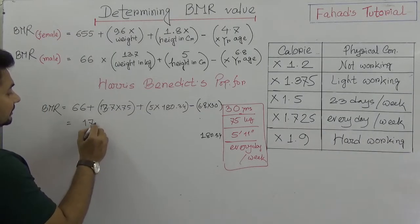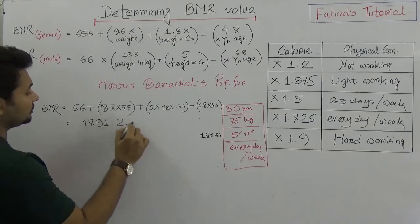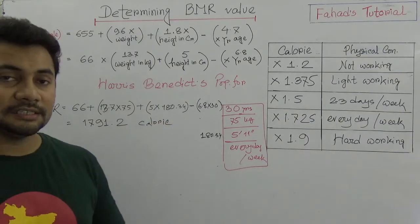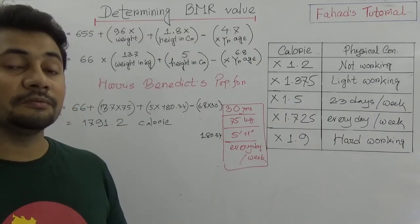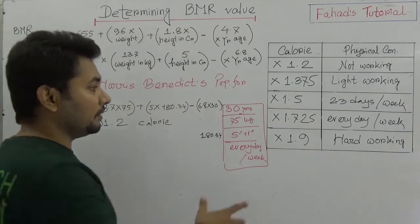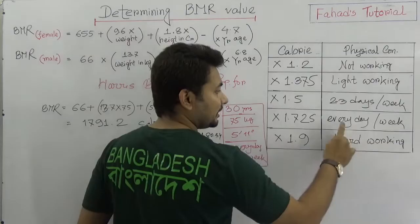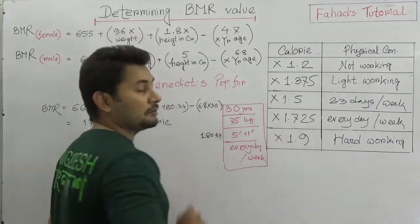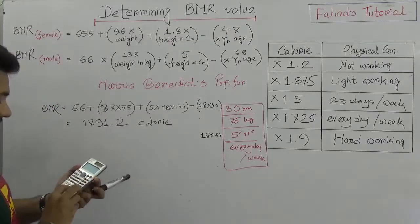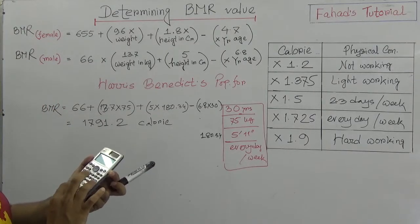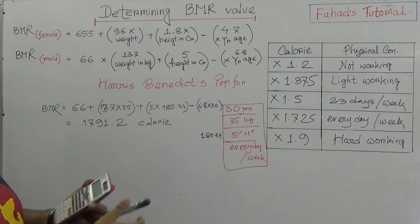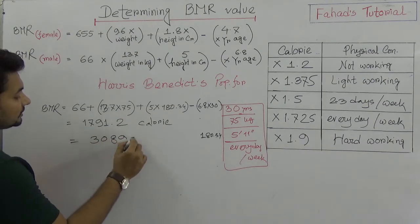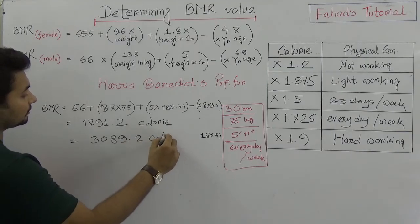But it was asked that this person works every day. When someone works every day, we need to multiply that BMR by 1.725. So 1791 times 1.725 equals approximately 3089.2 calories. That is the actual daily calorie requirement.